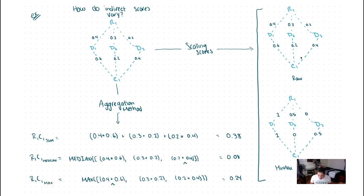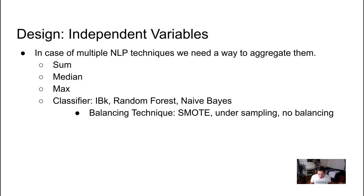In this example, for the techniques of aggregating multiple values into one, we did the sum, the median, max. But we also wanted to explore some machine learning techniques and see if that would help us. We used IBK and a random forest and a naive Bayes classifier, varying the balancing technique of the data using over balancing, under balancing and no balance. This is all performed on the Weka interface.